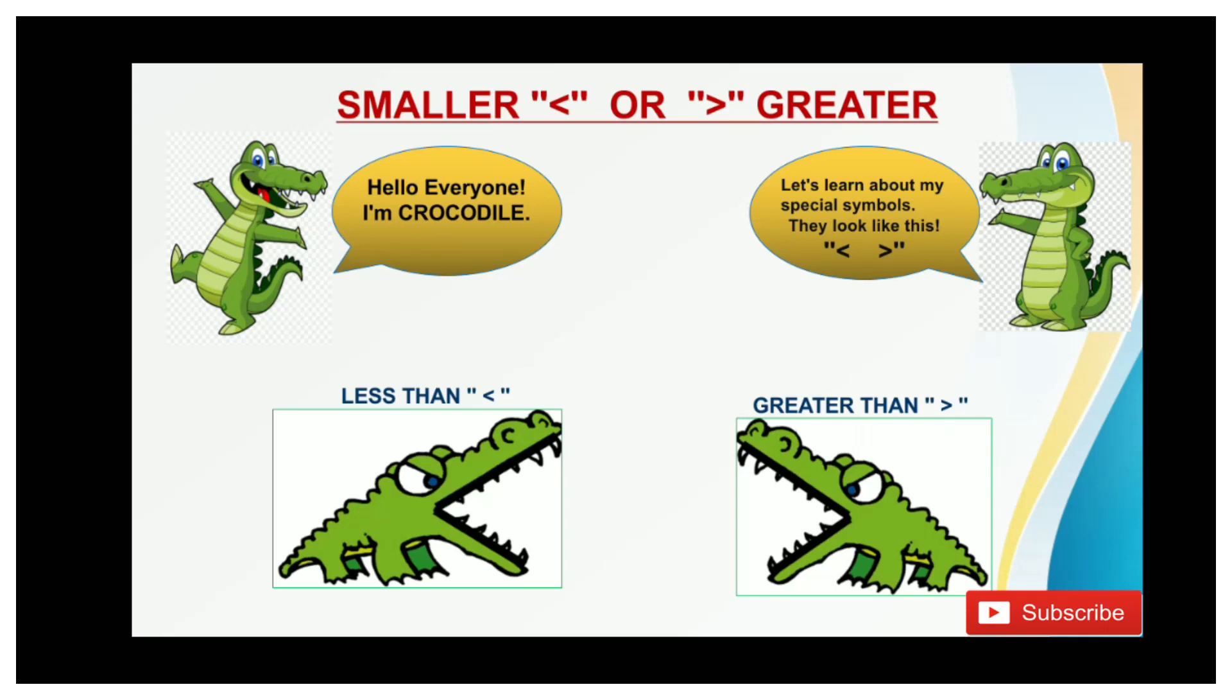Let's learn about the concept of greater and smaller numbers. As you can see in this picture there is a crocodile, and crocodile has special symbols which are useful for greater and smaller numbers. Let's understand the sign with the help of crocodile mouth. Smaller sign indicates that the closed end of crocodile points towards the small number. Greater sign indicates that the open end of crocodile points towards the greater number.